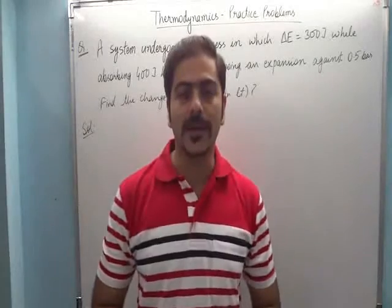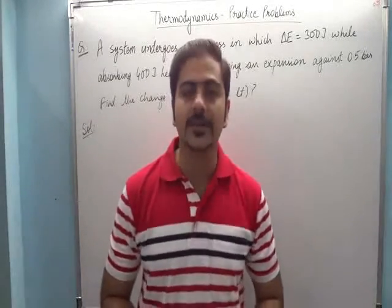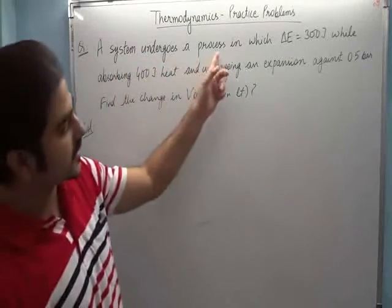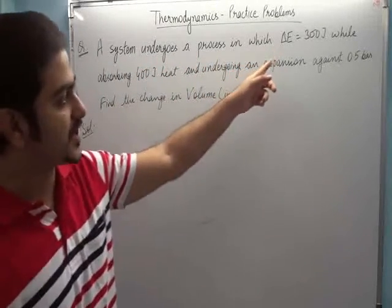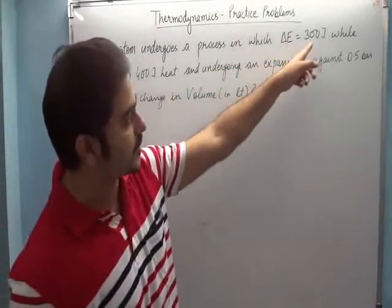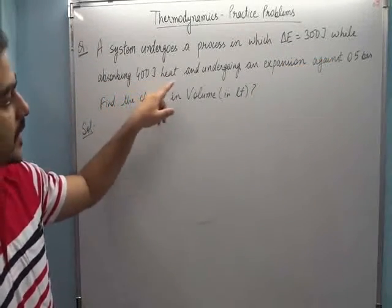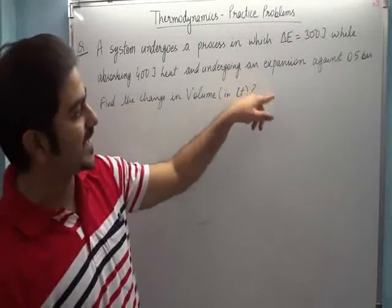Hi friends, let's do one more practice problem on thermodynamics. The question is: a system undergoes a process in which delta E, change in internal energy, is 300 joules while absorbing 400 joules of heat and undergoing an expansion against 0.5 bars.